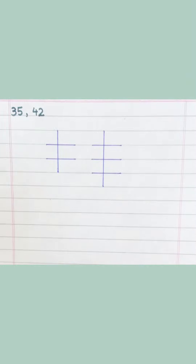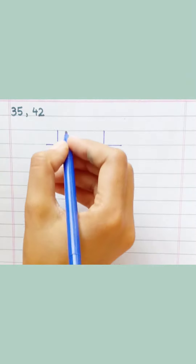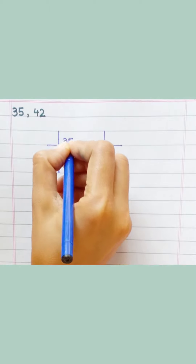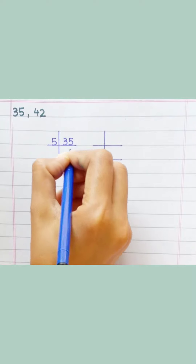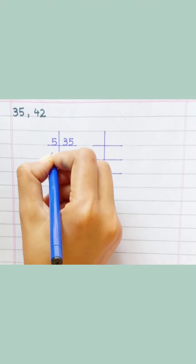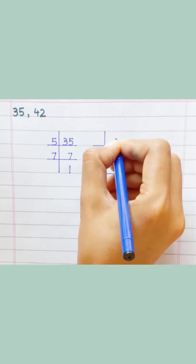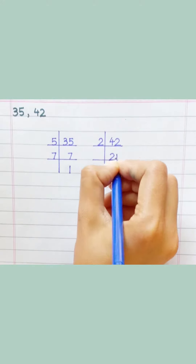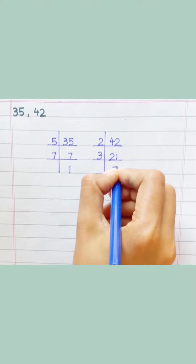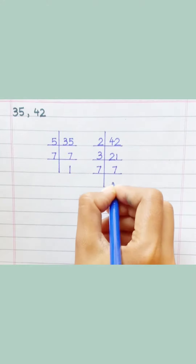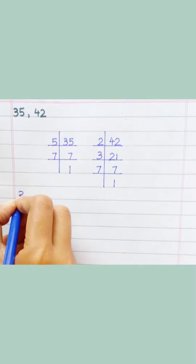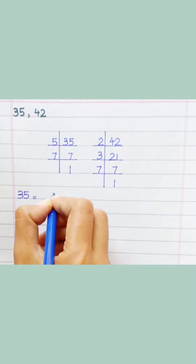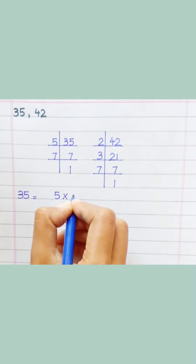We are finding the HCF of 35 and 42. First, let's factorize 35: 5 sevens are 35, so 35 equals 5 multiply 7. Working through the factor steps: 7 ones are 7, 2 twos are 4, 2 ones are 2, 3 sevens are 21, 7 ones are 7. So 35 equals 5 multiply 7.